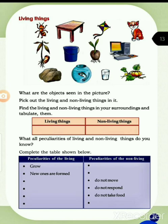Next page, page number 13, activity. Living things — that is the main topic of this unit. Here are some pictures: ant, table, kite, cat, a plant, bucket, coconut plant, computer, stone, fish, glass, pumpkin. These are some objects.